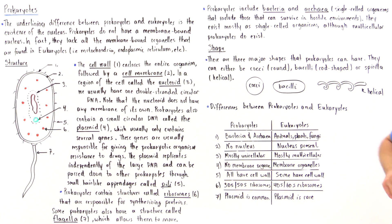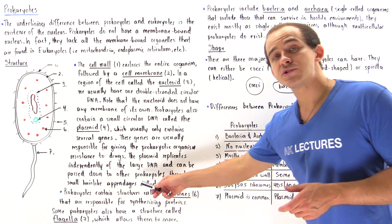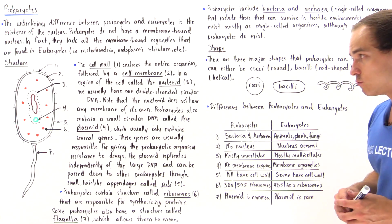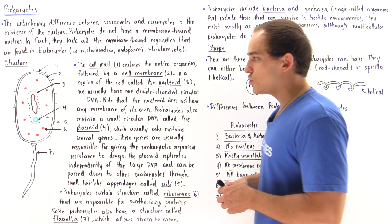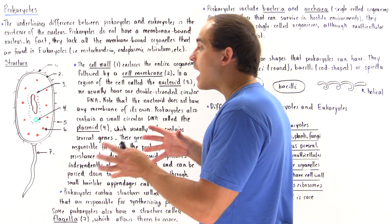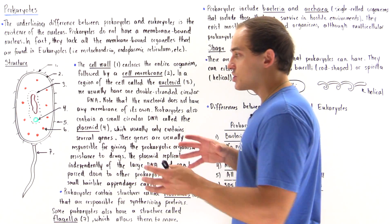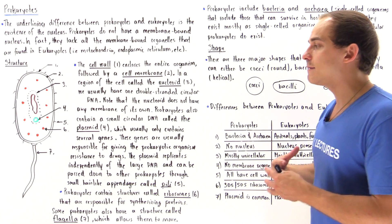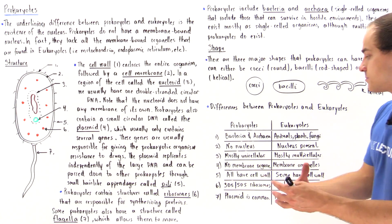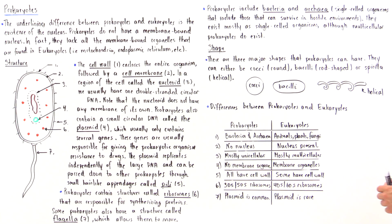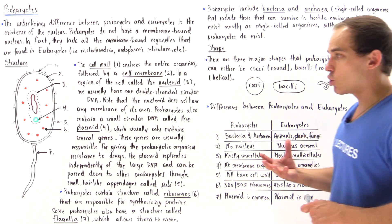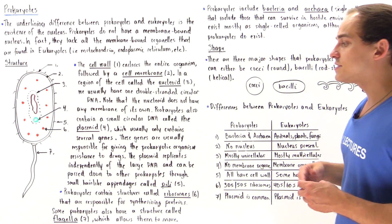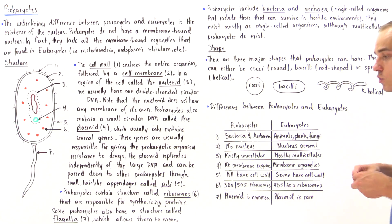Prokaryotic organisms also contain structures called ribosomes, just like eukaryotes do. But the types of ribosomes — the structure itself — is different in the two types of organisms. The ribosome is basically the location where we synthesize our proteins.